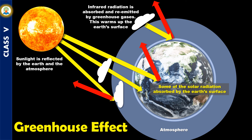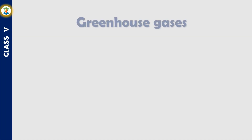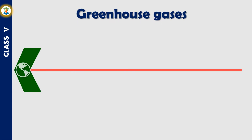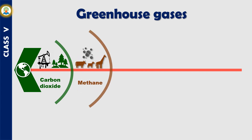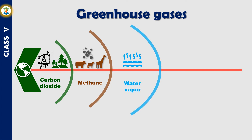Due to burning of fossil fuels and destruction of forests, the amount of carbon dioxide in the atmosphere has been increasing. This results in the trapping of more heat, thus increasing the temperature of the earth. Methane gas is released by grass-eating animals; it traps heat from the earth and makes it warmer. 35 to 75 percent of the greenhouse effect is caused by water vapor.